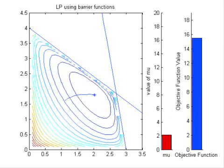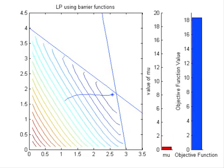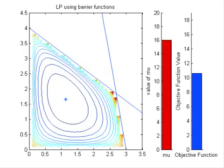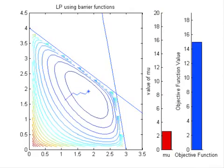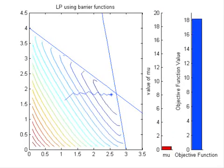Looking at the sequences again, we'll see how the Newton steps approximate the central path through the interior of the feasible region. Such methods are called interior point methods.